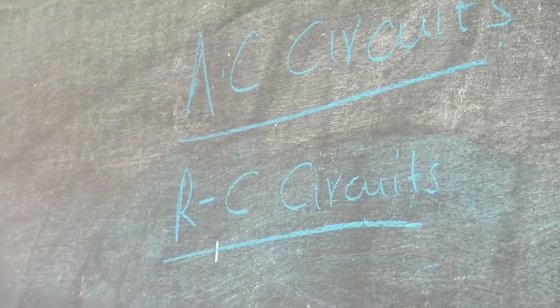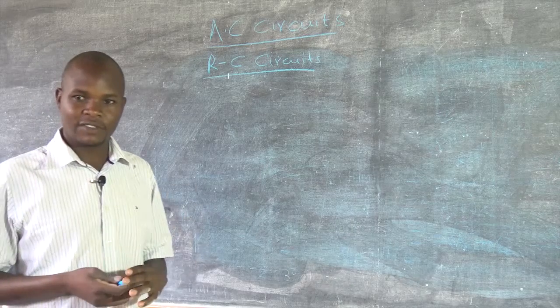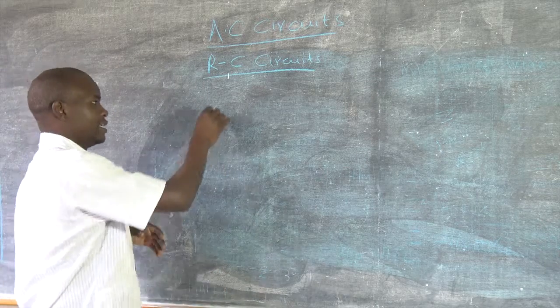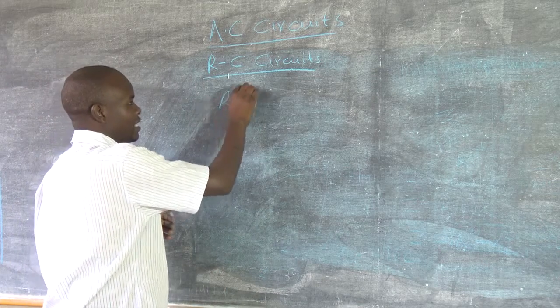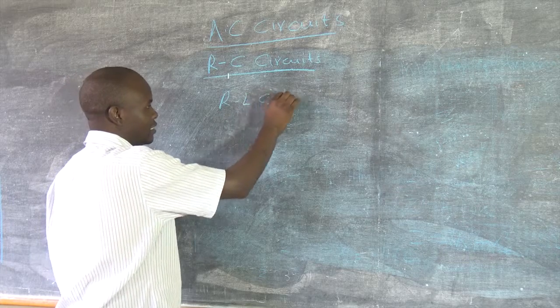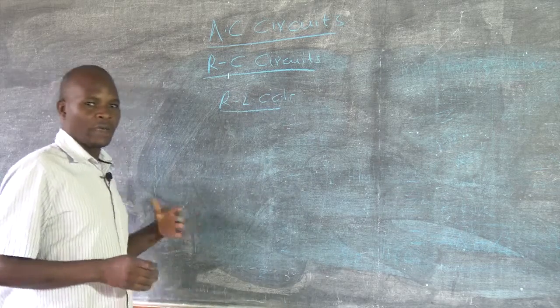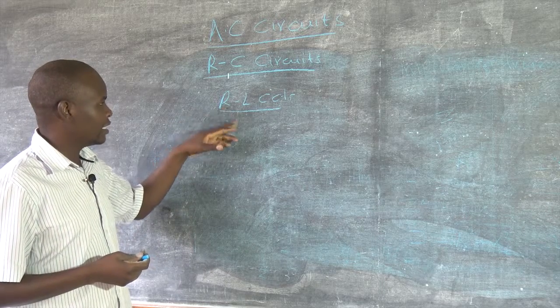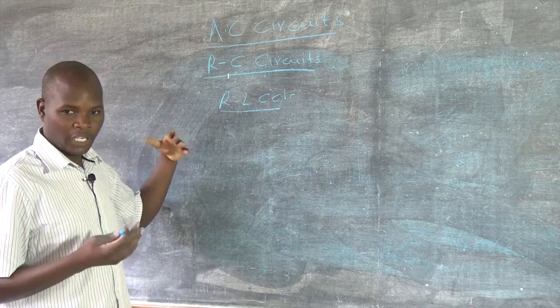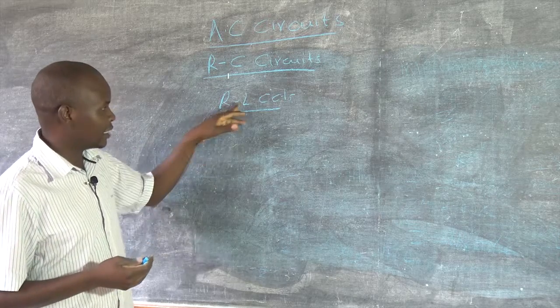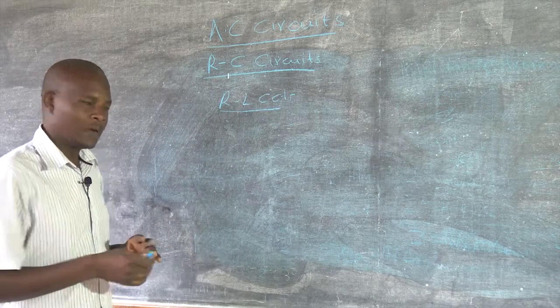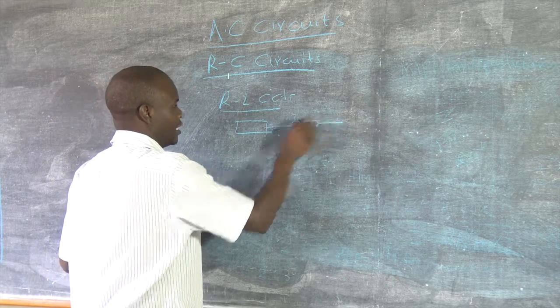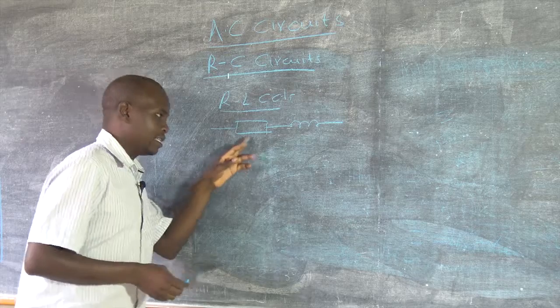Before we proceed with this, let us remind ourselves on what we learned last time. Last time we were dealing with RL circuits. We managed to see the connection between the resistance and inductance, and we say that this is the circuit in RC. This is the resistor.